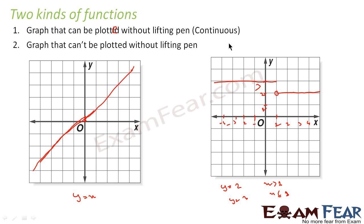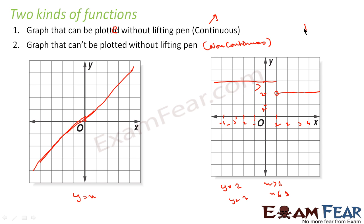Such a graph where you have to lift the pen is called non-continuous. The graph which can be plotted without lifting the pen is called a continuous graph, and the graph for which you have to lift the pen is called a non-continuous graph. The point where you have to lift the pen — in this case, at point 1 — is called the point of discontinuity.